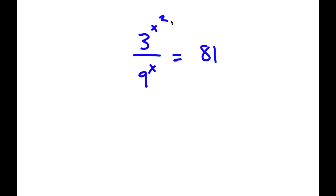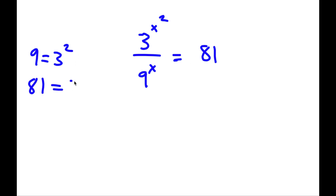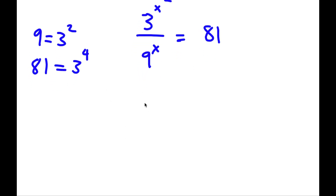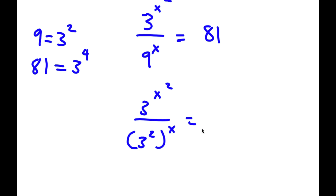Alright, so I have 3 to the power of x squared over 9 to the power of x is equal to 81. First off, 9 is the same thing as 3 squared, and 81 is the same thing as 3 to the power of 4. So if I replace 9 and 81 with 3 squared and 3 to the power of 4, I have 3 to the power of x squared over 3 squared to the power of x is equal to 3 to the power of 4.